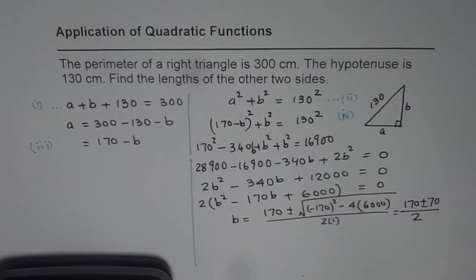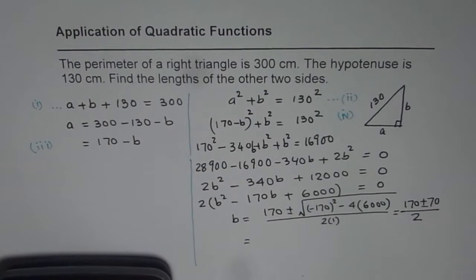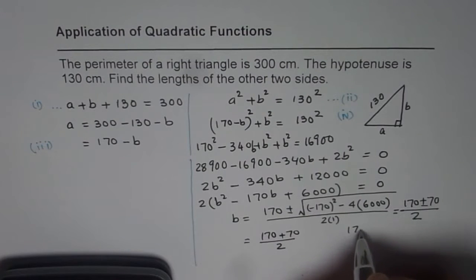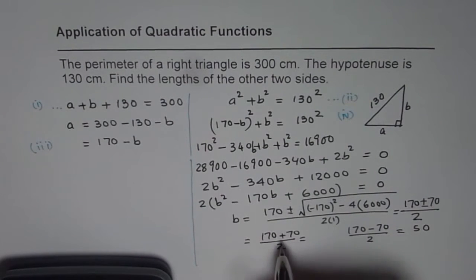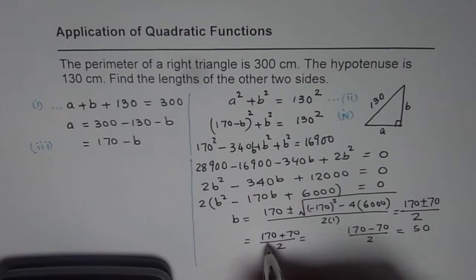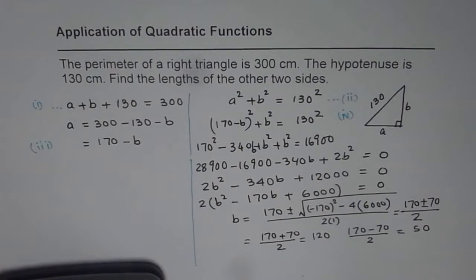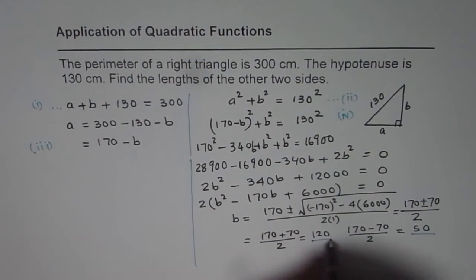That gives us two values for B. The first is (170 plus 70) divided by 2, which is 240 divided by 2, giving 120. The other is (170 minus 70) divided by 2, which is 100 divided by 2, giving 50. So the two values of B are 120 and 50.